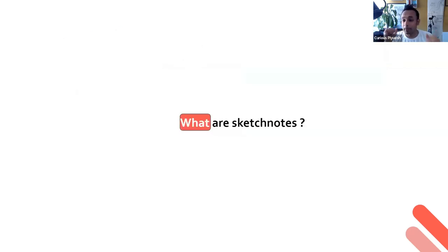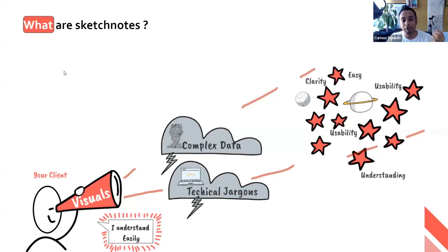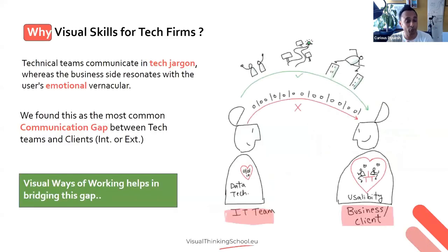Let's come down to what sketch notes are for those for whom sketch note is a new word. A typical example of a sketch note — imagine what visuals can do. Visuals can cut through complex data and technical jargon and show us clarity. I could have shown this in a boring textual paragraph format, but this visual slide is a sketch noted slide. Call it visual storytelling, call it a visual sketch note — this is what a typical sketch note is.